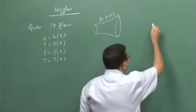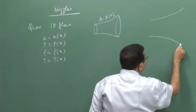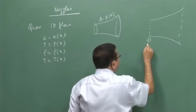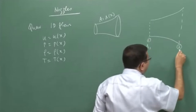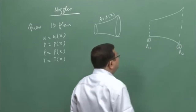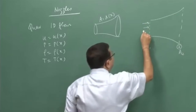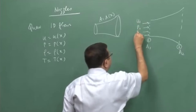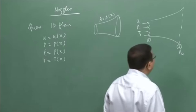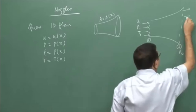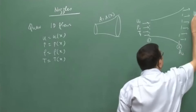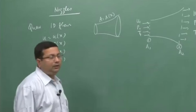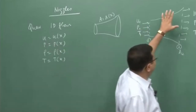We started discussing the flow through a stream tube with variable area, with area A1 at section 1 and A2 at section 2. We considered the flow to be quasi 1-D. The properties at the inlet are p1, T1, u1, etcetera, and at the exit, the velocity is uniform u2, pressure is p2, temperature is T2, etcetera. This is the problem we were solving last time.